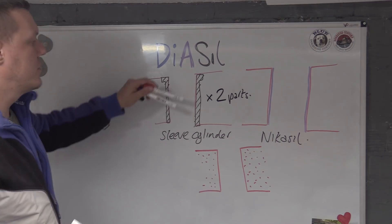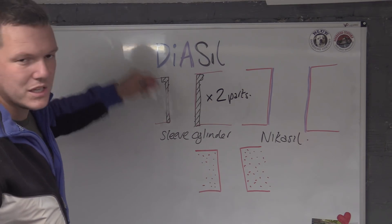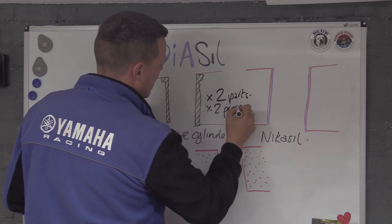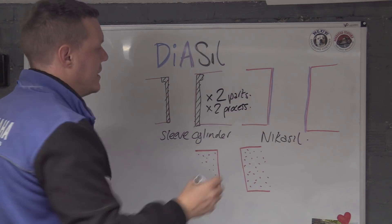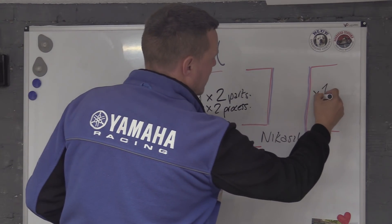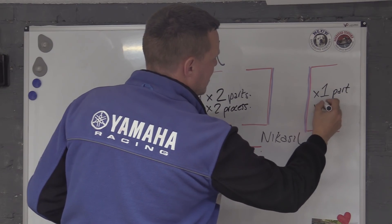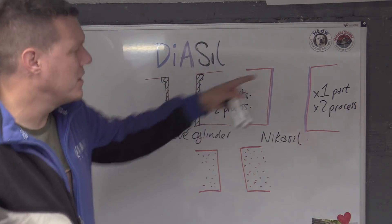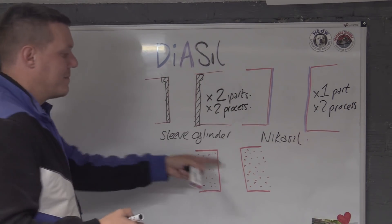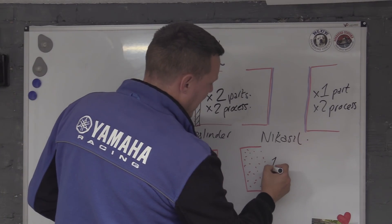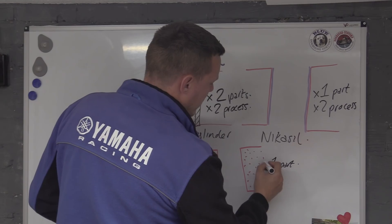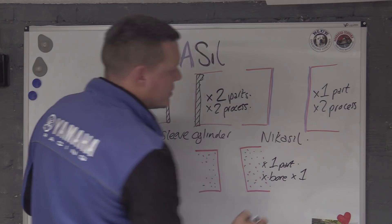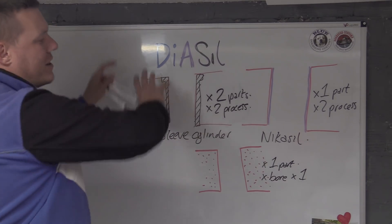On this thing you have two parts, times two parts. You've got to machine the sleeves and you've got to machine the cylinders, so it's times two process. This one is times one part, it's only one part, but you've got times two for the process because you've got to do exactly the same thing, just instead of making a sleeve you've got to coat it. This one it's one part and all you've got to do is just bore it.